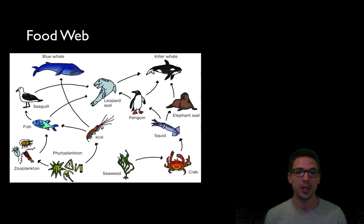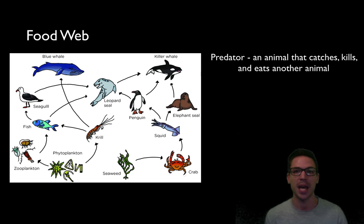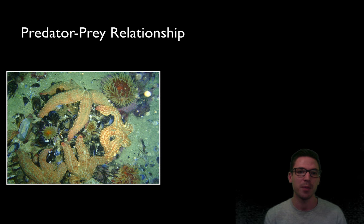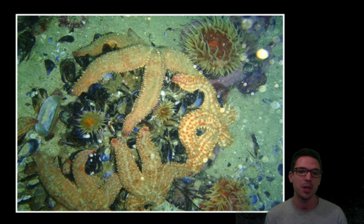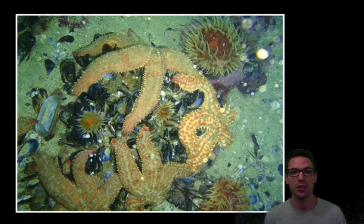One relationship we want to examine closely is the predator-prey relationship. When defining predator, it's a very specific term — predators are animals that catch, kill, and eat another animal. Don't just define it as an organism that eats another organism, because an herbivore eating a producer is technically not a predator. It's specifically an animal-to-animal interaction. Here we have predatory starfish feeding on mussels. If the mussel population is high, the starfish population will grow. But eventually with so many starfish, the mussel population begins to fall, and as mussels fall, the starfish then have less food and their population falls too.